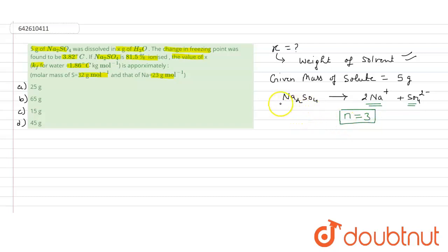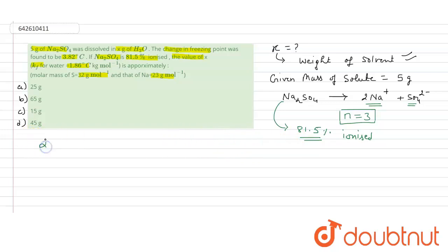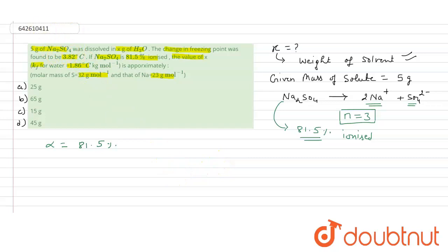It is given in the question that Na2SO4 is 81.5% ionized. So the value of alpha, the degree of dissociation, is 81.5%, which means alpha equals 0.815. We need to find the value of X, which is the weight of the solvent.